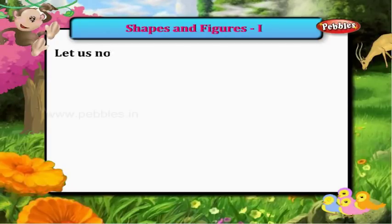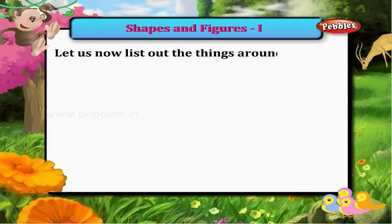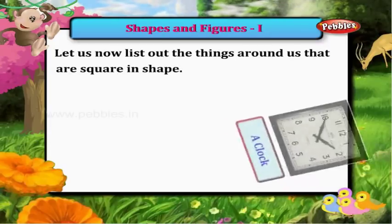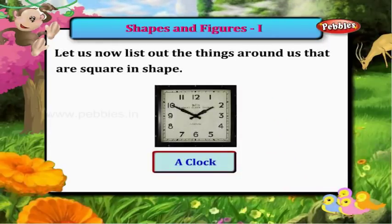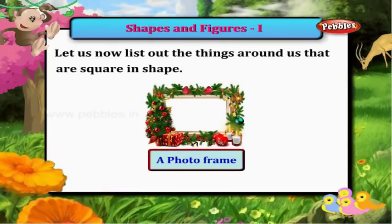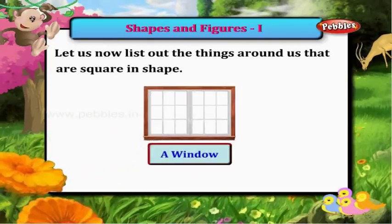Let us now list out the things around us that are square in shape: a clock, a photo frame, a window.